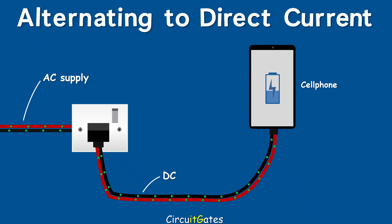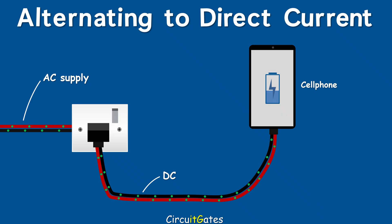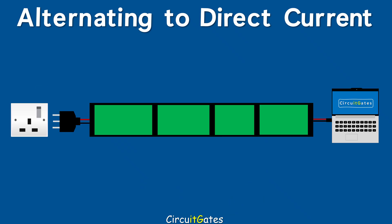Our cell phone chargers, laptop chargers, and TV power supply units commonly found at the back of TVs convert AC electricity to DC electricity. When converting AC to DC, there are four stages: voltage step down, rectification, filtering, and voltage regulation.